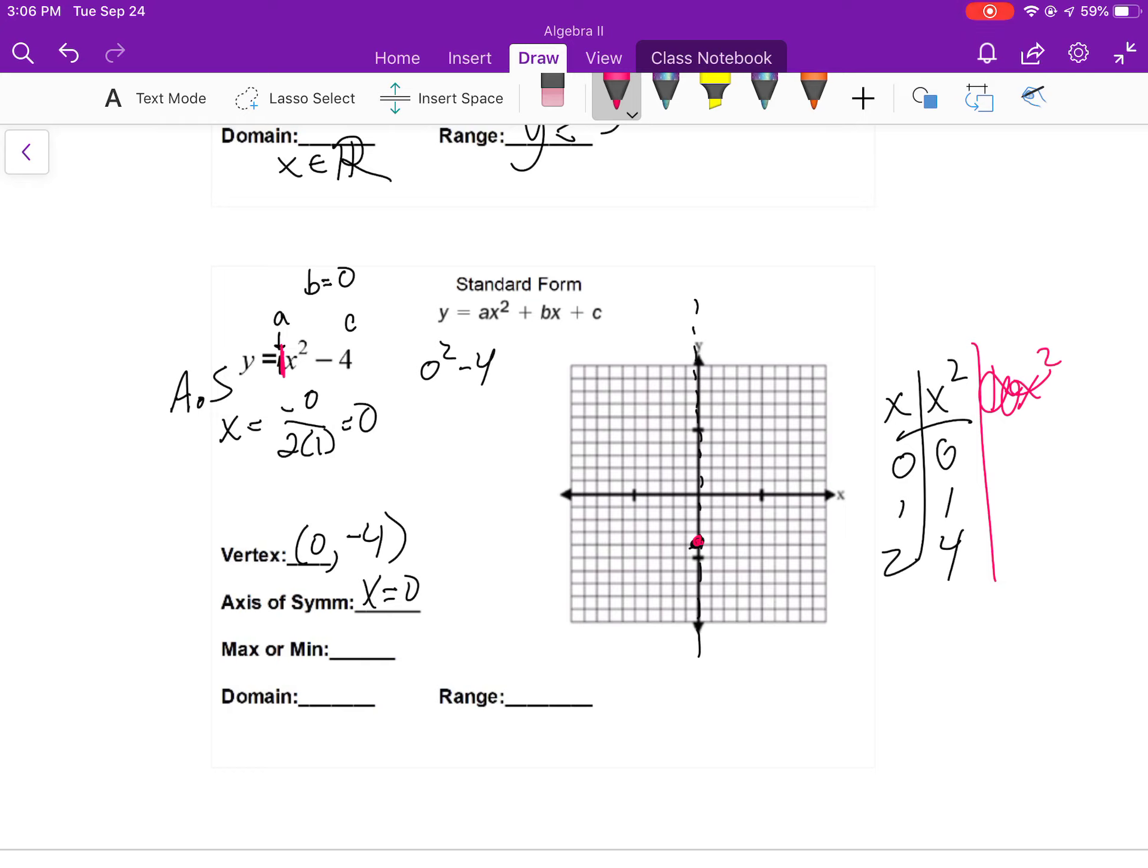So 0, 0, 1, 1, 2, 4. And if I use some symmetry, there's 1 block away, 2 blocks away. And there's the graph of my parabola.